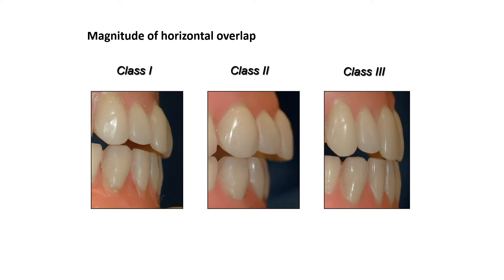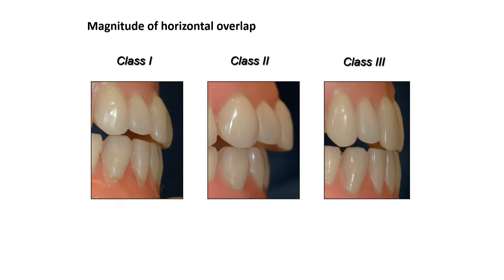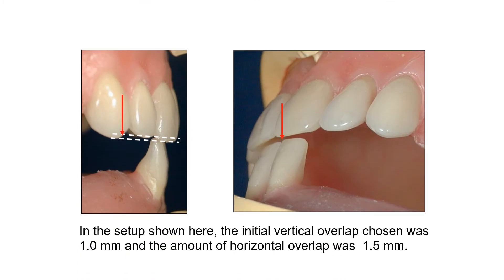We are always trying to return to the class 1 setup and use the normal class 1 relationship. In the setup of the teeth, the initial vertical overlap chosen was 1 mm, and the horizontal overlap was 1 to 2 — that is, 1.5 mm.